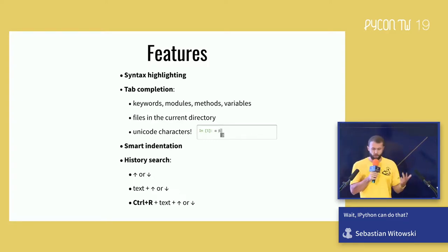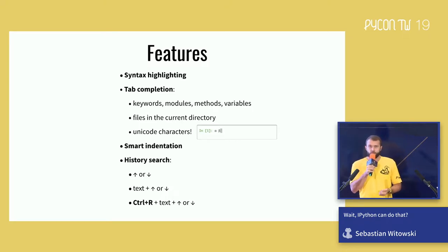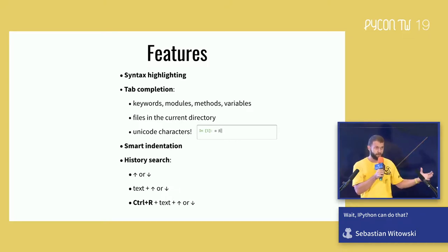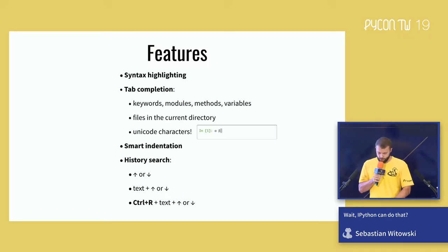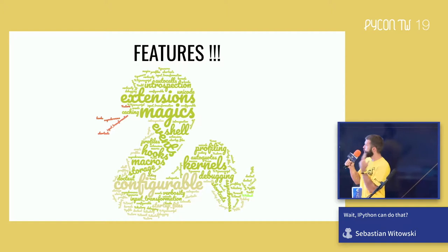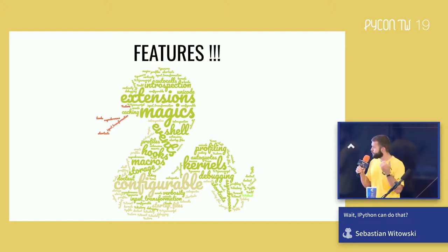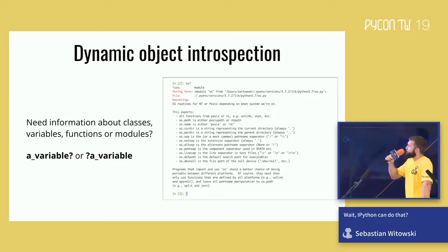IPython has syntax highlighting and tab completion — not only for keywords, modules, methods, and variables, but also for files in the current directory and for Unicode characters. It has smart indentation, so when you start writing a function or a loop and press Enter, it automatically indents the next line. You can search history with arrow keys or use Ctrl+R. But that's just the tip of the iceberg. IPython also has extensions, magic functions, shell commands, events, hooks, macros, lightweight storage, it's fully configurable, you can swap kernels, use it for debugging asynchronous code, and much more.